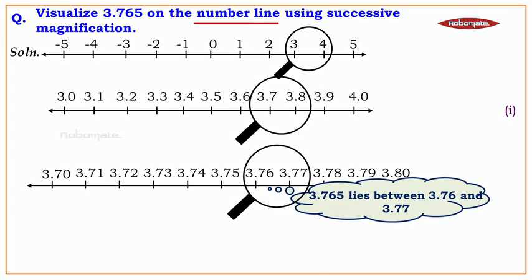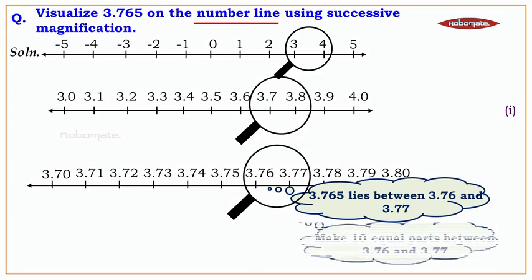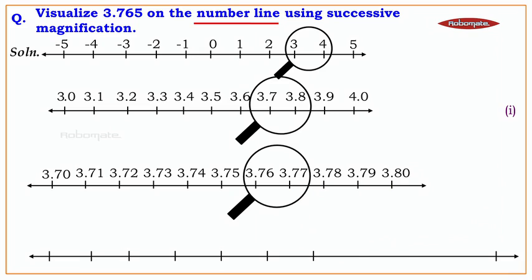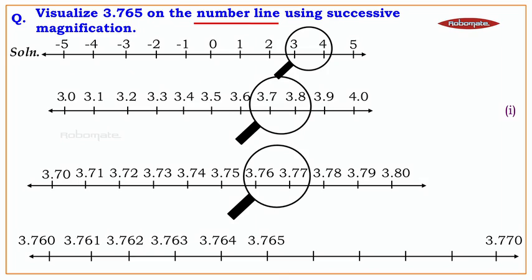We are going to magnify the part between 3.76 and 3.77 by making 10 equal parts, drawing one more number line with 10 divisions. The first division is 3.760 and the last is 3.770. The numbers in between are 3.761, 3.762, 3.763, 3.764, 3.765, 3.766, 3.767, 3.768, 3.769, and 3.770. We can now see 3.765 clearly on the number line — this is how we visualize 3.765 using successive magnification.